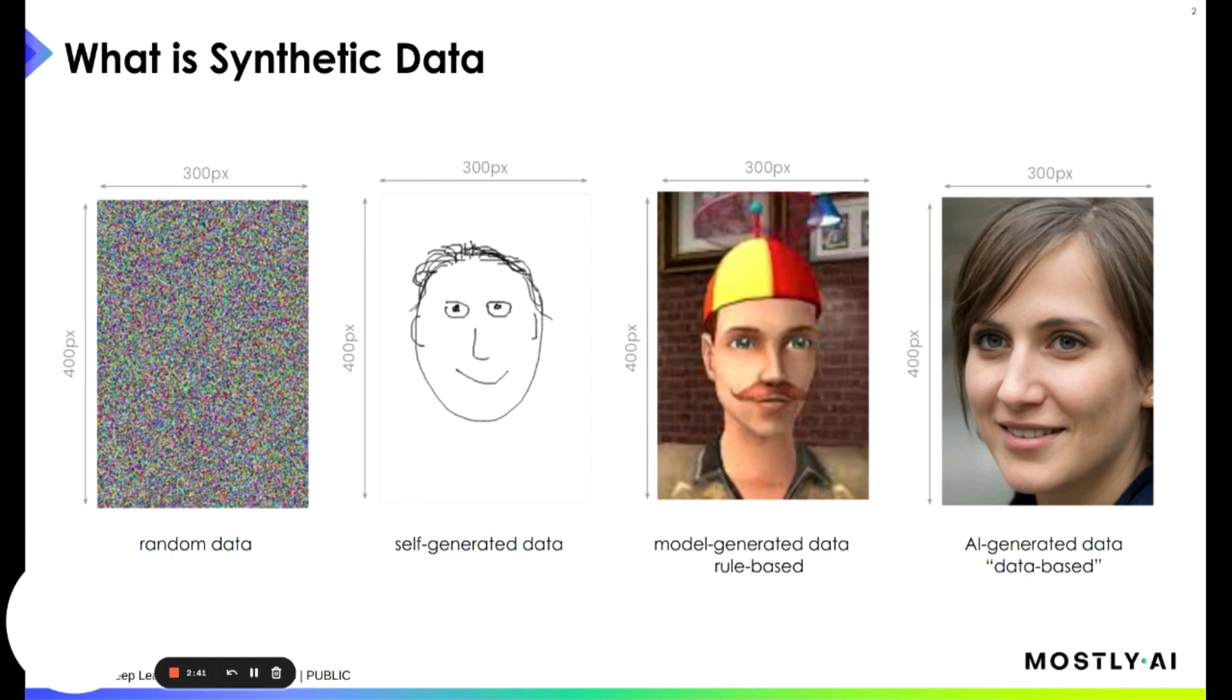Next up would be what I call model-generated data or rule-based synthetic data. The idea here is that the model, for example, could consist of a distribution of 300 different faces, 50 different eye colors or eye shapes, 60 different heads, 40 different moustaches and so on. The model could then randomly combine all those heads and eyes and faces to create a population of different faces.